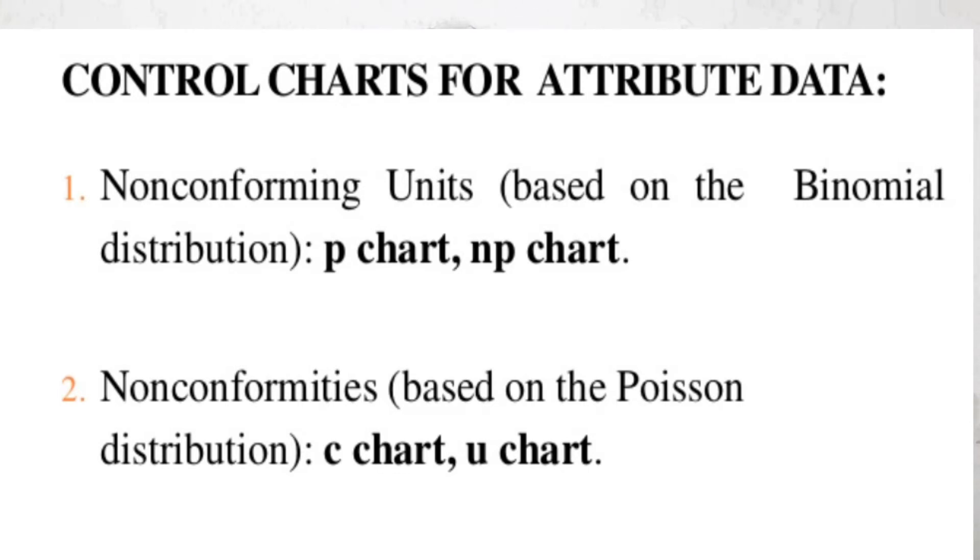When we say number of defects, it means, take an example: say there is an assembly line where we are doing final inspection for cars. When we talk about number of defectives, we can say that in the entire lot of 1,000 cars, there are 5 cars which are non-conforming.